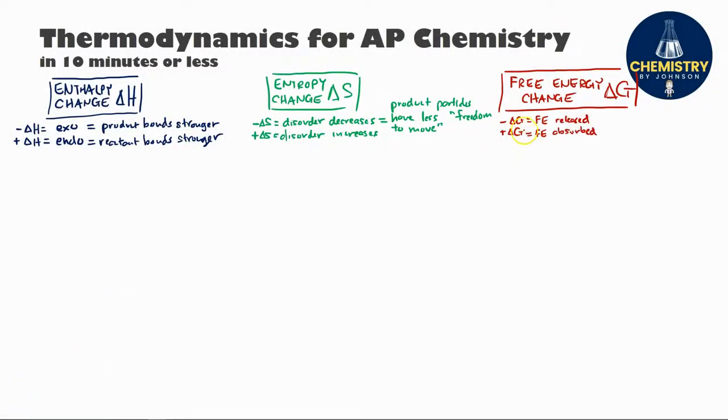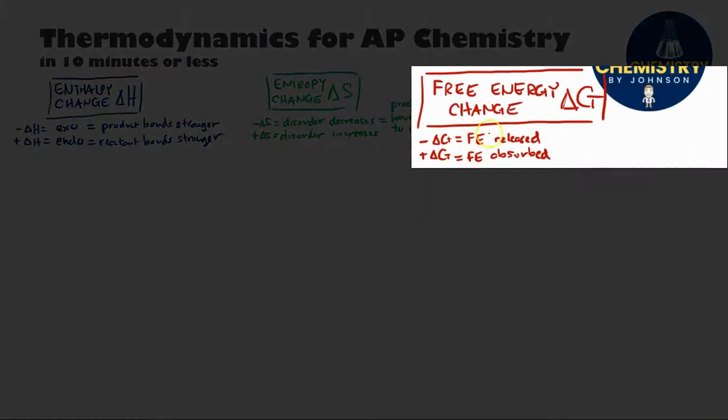And lastly, for delta G, if you see a negative value, that means free energy is released. Positive means that free energy is absorbed. And this is really important because if it's negative, that tells us that the reaction is thermodynamically favorable or what is sometimes also known as spontaneous, which really just tells us if the reaction can happen on its own or not.